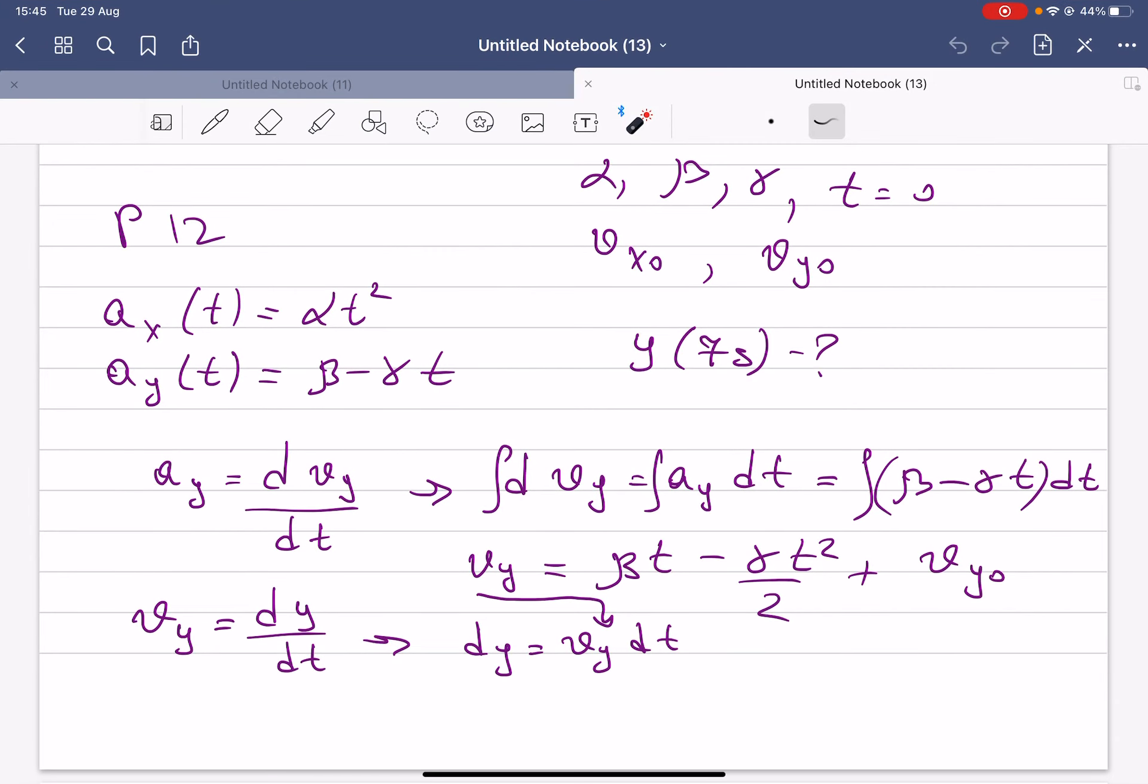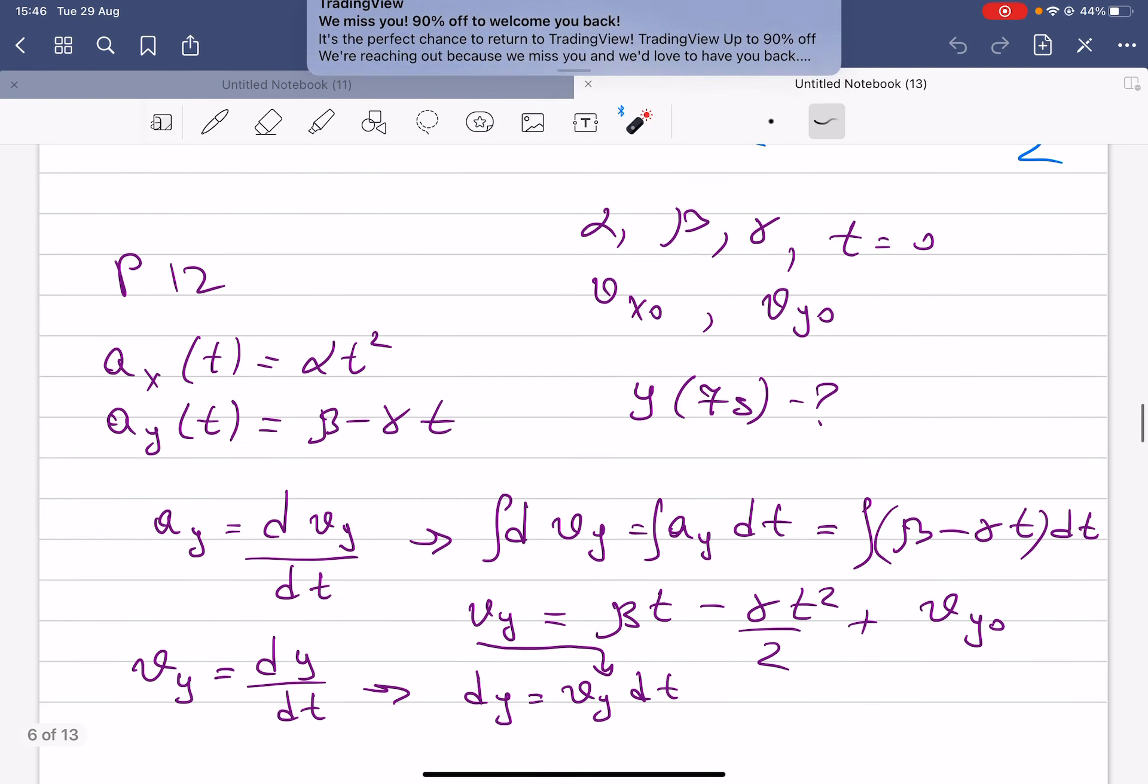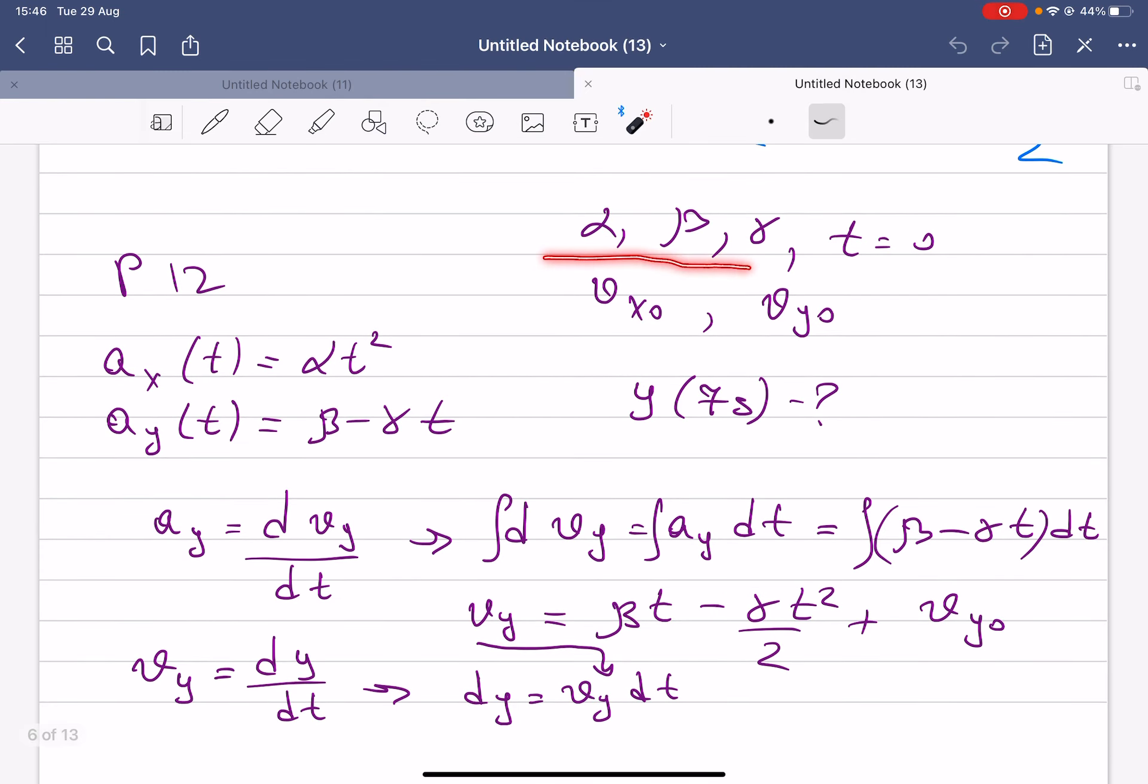In problem number 12, we have given that ax varying with time is equal to alpha times t squared, and ay, acceleration in the y direction as a function of time, is equal to beta minus gamma t. We know that alpha, beta, gamma, vx initial, and vy initial are all given.